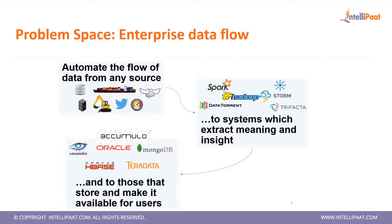On the right side, these tools are used for processing: Hadoop uses MapReduce for processing, Spark is used for processing, and Trifecta is a tool which has pre-built models. Storm is also used for processing. On the left bottom side, there are tools used for storage — Cassandra, MongoDB, Teradata, and Apache Accumulo. These are all databases.